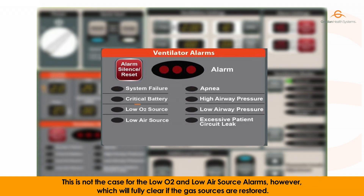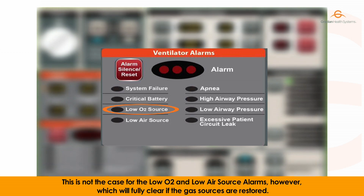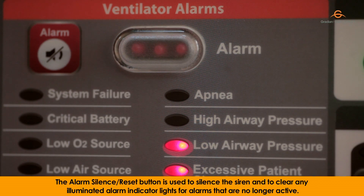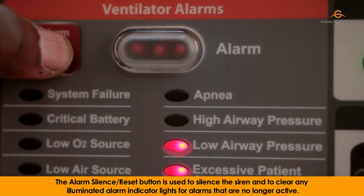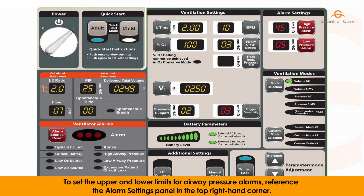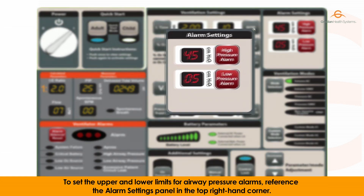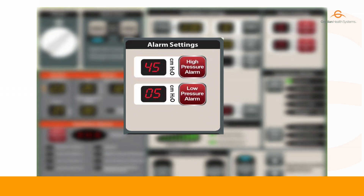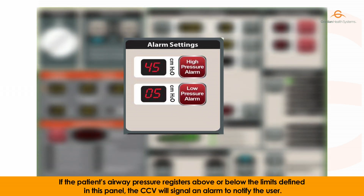This is not the case for the low oxygen and low air source alarms, however, which will fully clear if the gas sources are restored. The alarm silence/reset button is used to silence the siren and to clear any illuminated alarm indicator lights for alarms that are no longer active. To set the upper and lower limits for the airway pressure alarms, reference the alarm settings panel in the top right-hand corner. If the patient's airway pressure registers above or below the limits defined in this panel, the CCV will signal an alarm to notify the user.